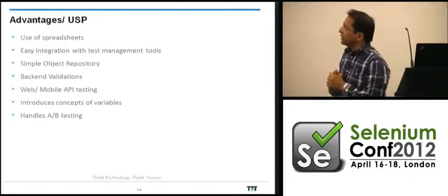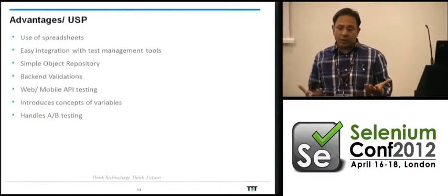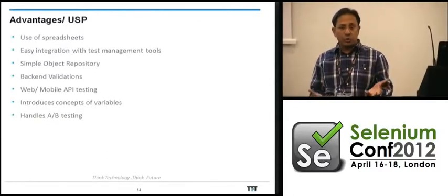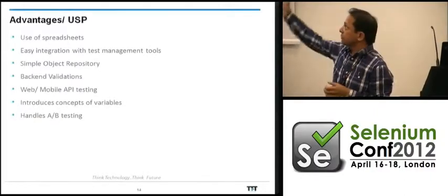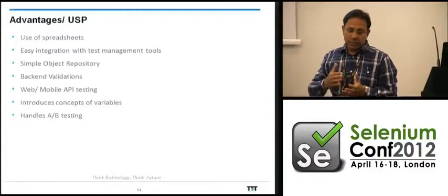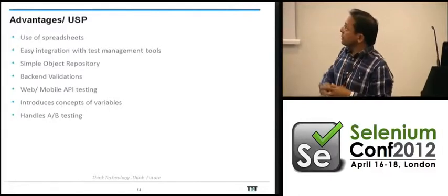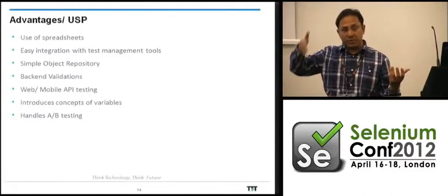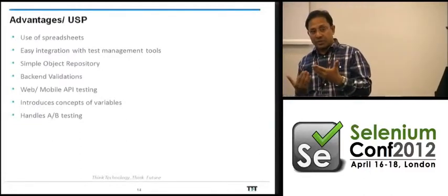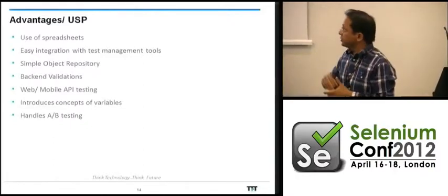One advantage of this framework is that QA engineers are very used to the spreadsheet format — that's how they read manual test cases. So it's incremental learning without needing to learn something entirely new. It's also easy to integrate with the test case management tool and test automation layer because we've abstracted out the keyword-driven functions that need to be implemented using the automation API.